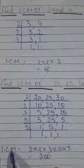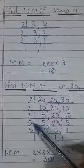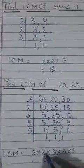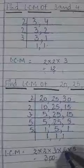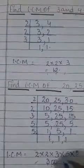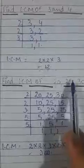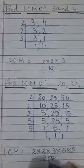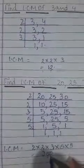So the LCM of 20, 25, and 30 is 2 multiplied by 2 multiplied by 3 multiplied by 5 multiplied by 5. Calculating: 2 twos are 4, 4 threes are 12, 12 fives are 60, and 60 fives are 300. So when you write the multiples of 20, 25, and 30, the lowest common multiple you will get is 300. The LCM of these three numbers is 300.